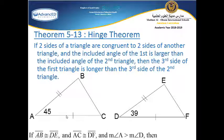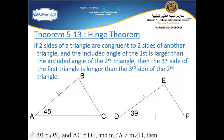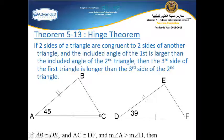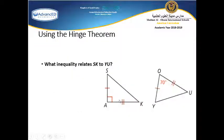Looking at two triangles where two sides are congruent, if the included angle is 45° and the other included angle is 39°, they are not congruent. Then the third side BC, opposite to the larger angle 45°, is bigger than the third side EF opposite to the smaller angle 39°. Since angle A is bigger than angle D, BC is bigger than EF.